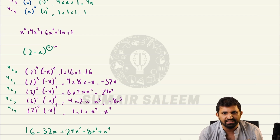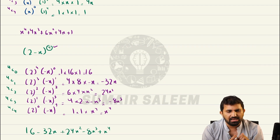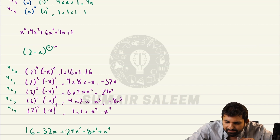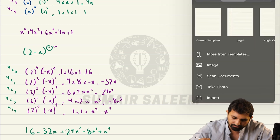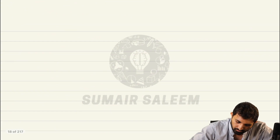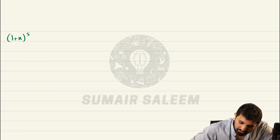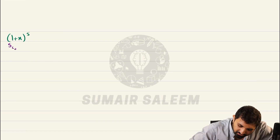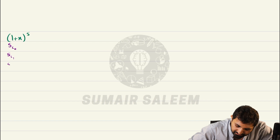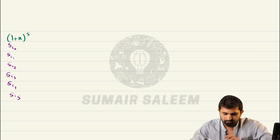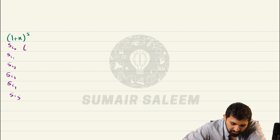Let's do one last example of full expansion. The question is 1 plus x to the power 5. I will write: 5C0, 5C1, 5C2, 5C3, 5C4, 5C5. The first term is 1 each time: 1, 1, 1, 1, 1, 1.